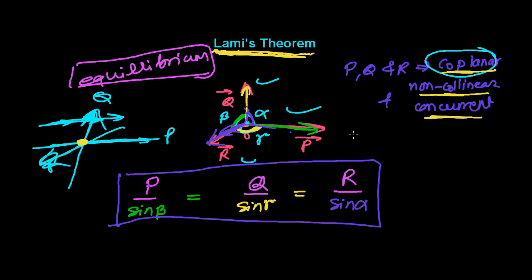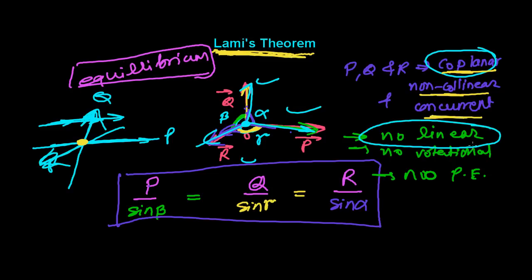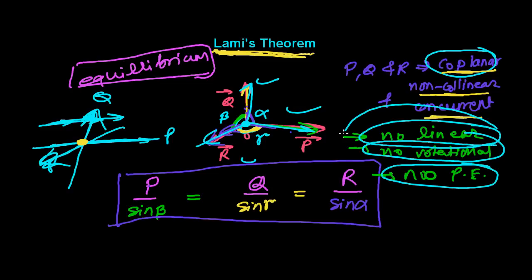These forces must be coplanar, non-collinear, and concurrent, and they must be in equilibrium. The condition of equilibrium means the object should have no linear motion, no rotational motion, and no stored potential energy. When forces P, Q, and R act on an object or point, the object should have zero linear motion, zero rotational motion, and zero stored potential energy.